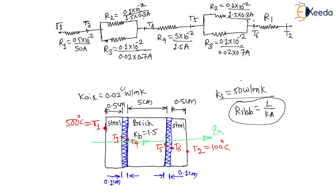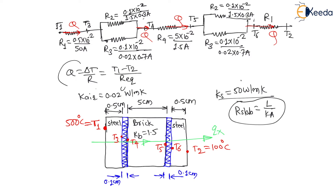This is the circuit. Heat Q is flowing through it. To find this heat, Q = ΔT / R_total = (T1 − T2) / R_total. T1 = 500°C and T2 = 100°C. We need to calculate the total equivalent resistance.